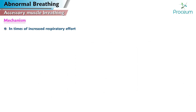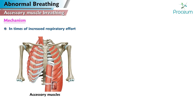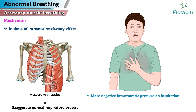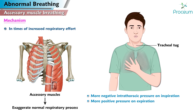Mechanism of accessory muscle breathing. In times of increased respiratory effort, the accessory muscles of breathing are set in use to exaggerate the normal respiratory process. The use of the accessory muscles can create more negative intrathoracic pressure on inspiration, pulling more air in and possibly causing tracheal tug, and more positive pressure on expiration, pushing air out.